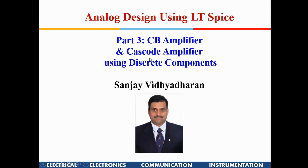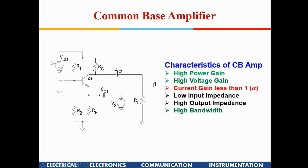This is the schematic of a common base amplifier. The difference here is that we apply the source into the emitter of the transistor, the output is tapped from the collector, and the base is the common ground for both input and output — that's where the name 'common base' comes from.